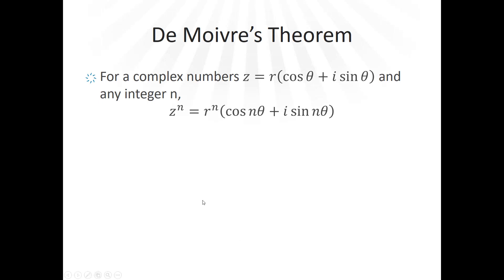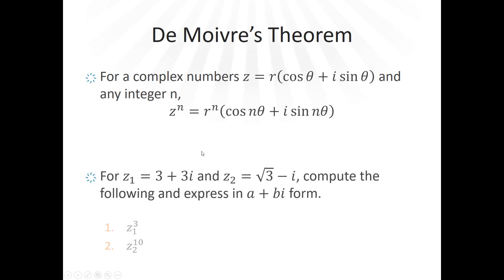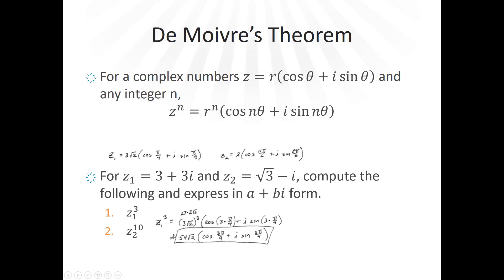The last theorem is De Moivre's theorem, which shows how to compute powers of complex numbers. If you have Z to the nth power, you get r to the nth power times cosine of n theta plus i sine of n theta. For example, taking our first complex number to the third power: three root two to the third power is fifty-four root two, and the angle is three times pi over four, giving three pi over four. So the result is fifty-four root two times the quantity cosine of three pi over four plus i sine of three pi over four.